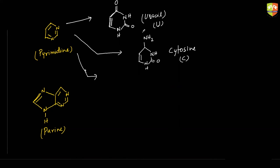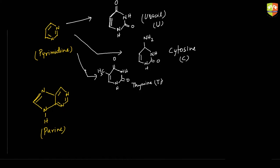One more structure — thymine. Thymine is everything the same as uracil, but the only difference is that here we do not have one hydrogen but instead one CH3 present on that carbon. The structure has double bond O, double bond O, double bond here, CH3, NH and NH. This structure is thymine, represented by T. These are the three bases of pyrimidine which are present in DNA.